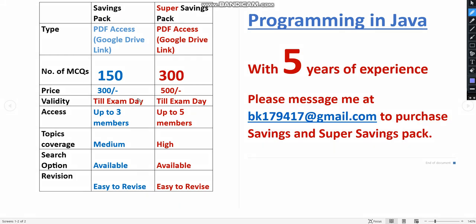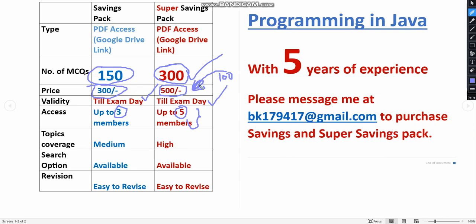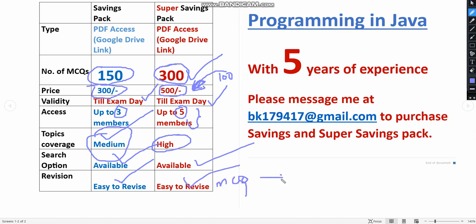The validity will be till the exam day, and even if the exam is postponed we will extend that period. The Savings Pack allows up to three members to access it. The Super Savings Pack with 300 MCQs costs 500 rupees and allows up to five members — so five classmates can form a group and share 100 rupees each. Topic coverage in the Savings Pack is medium and in the Super Savings Pack is very high. A search option is available in both, making them easy to revise before the exam.